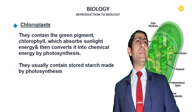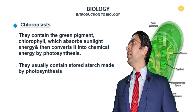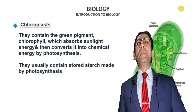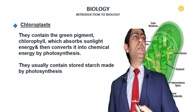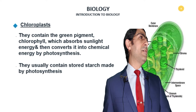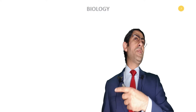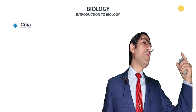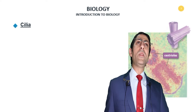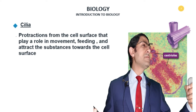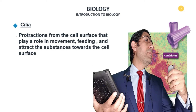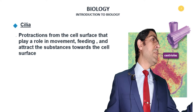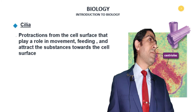Centrioles are organelles found in pairs and play a role in cell division. During cell division, each one of the pair will go to the poles of the cell in order to pull the chromosomes prior to cell division.